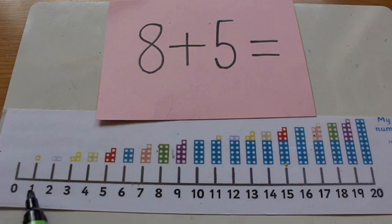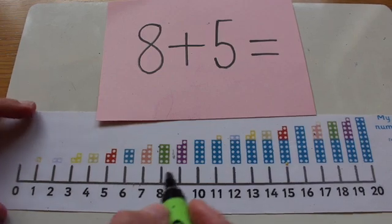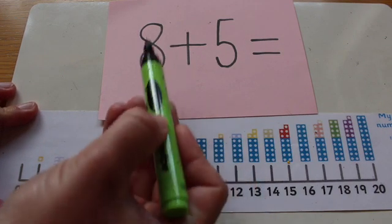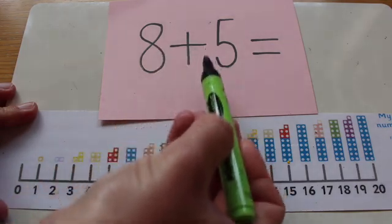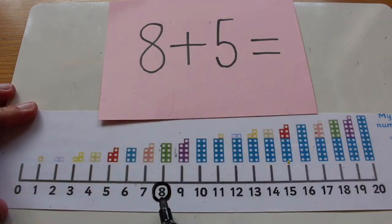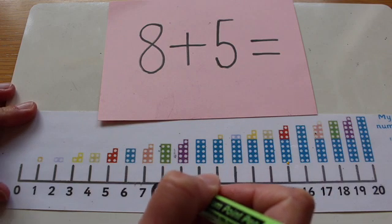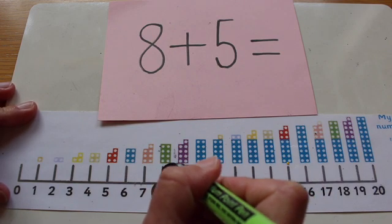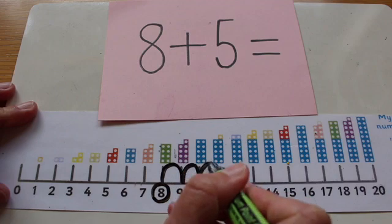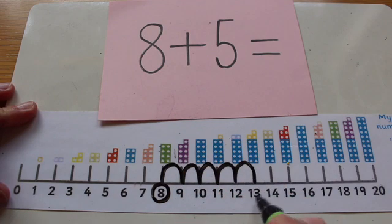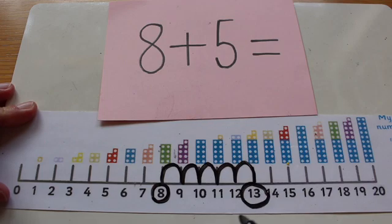So 0, 1, 2, 3, 4, 5, 6, 7, 8. I'm going to put a circle around that number. It wants me to start with 8 and add 5, so I'm going to start on the 8 and do 5 jumps. I'm going to hop forwards like a bunny: 1, 2, 3, 4, 5. I ended up on number 13.